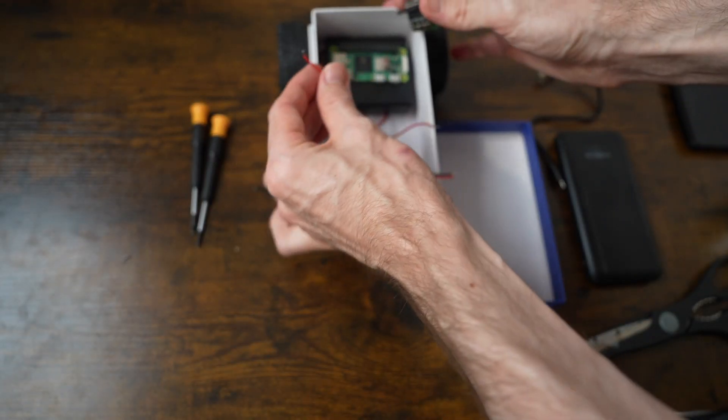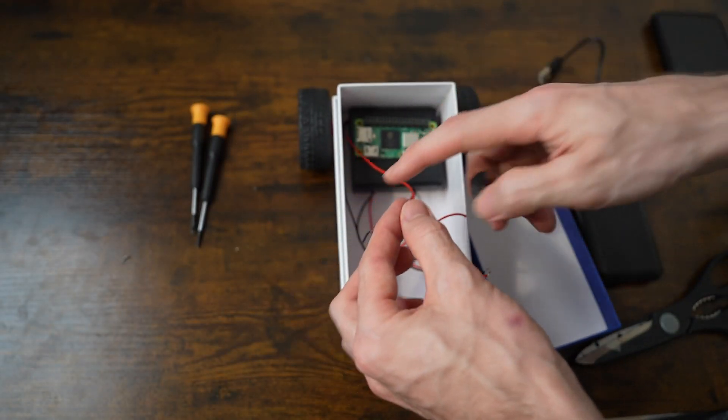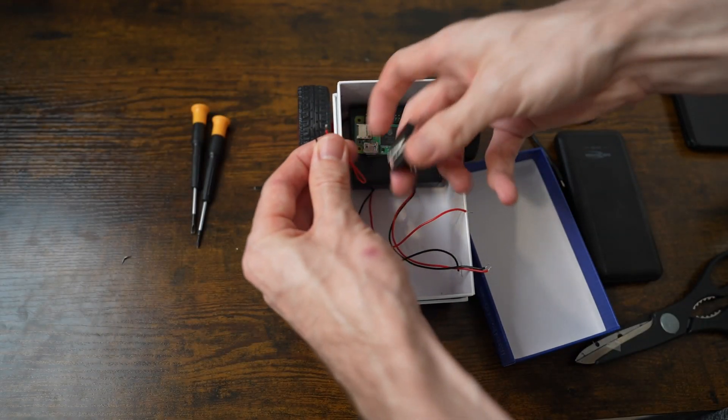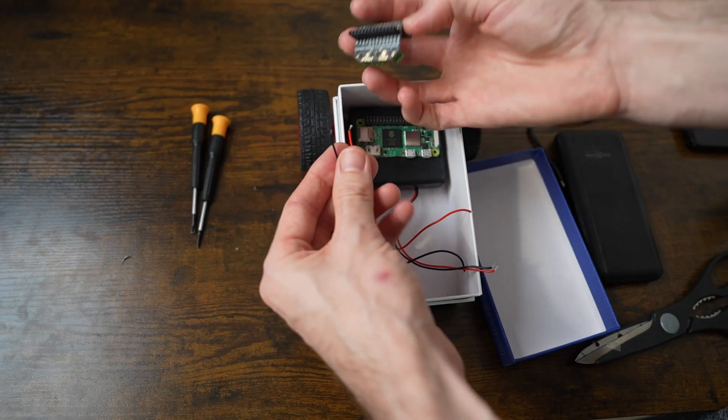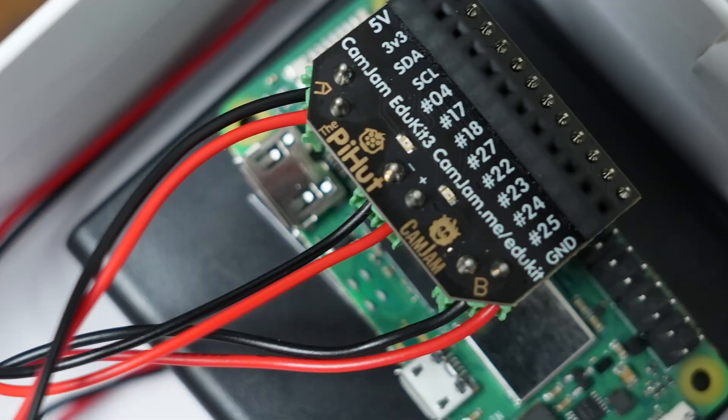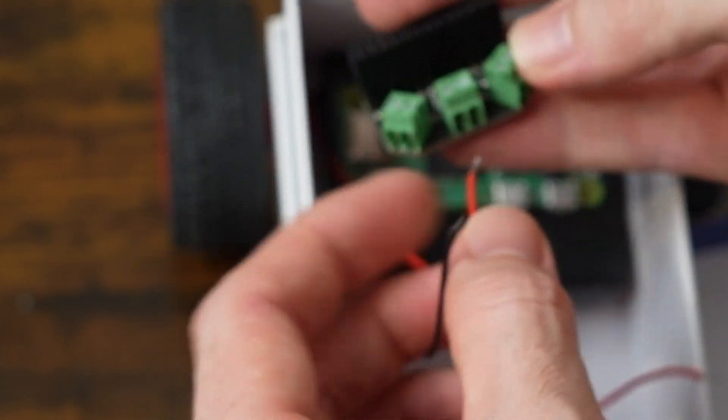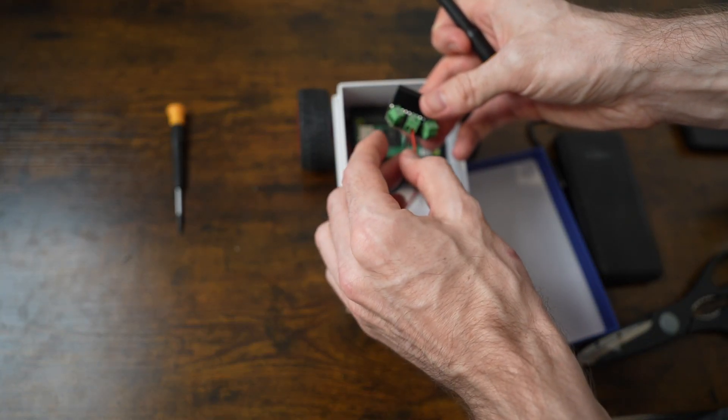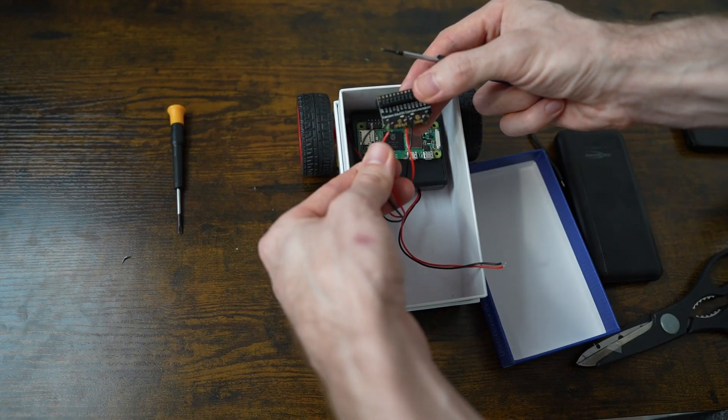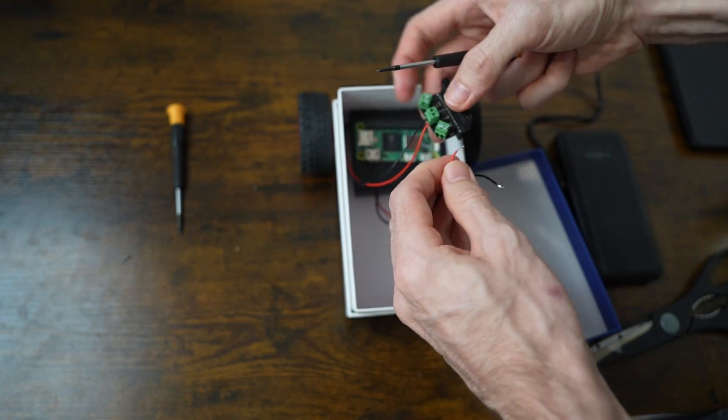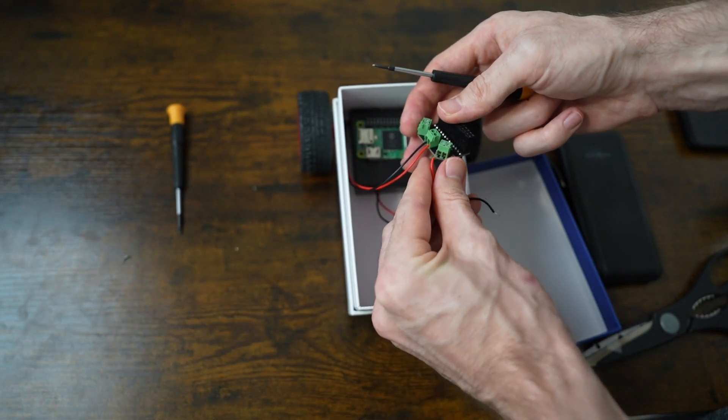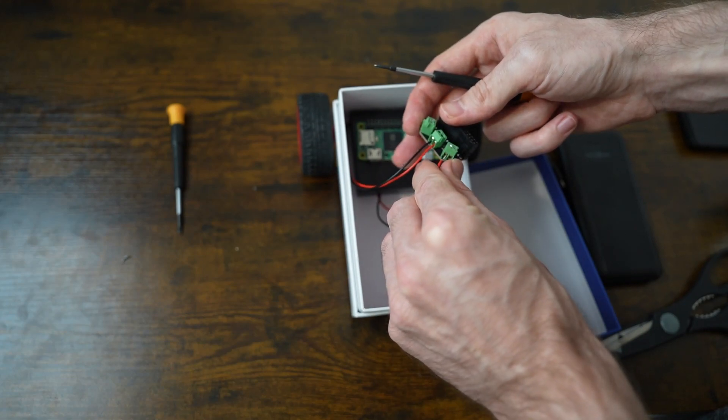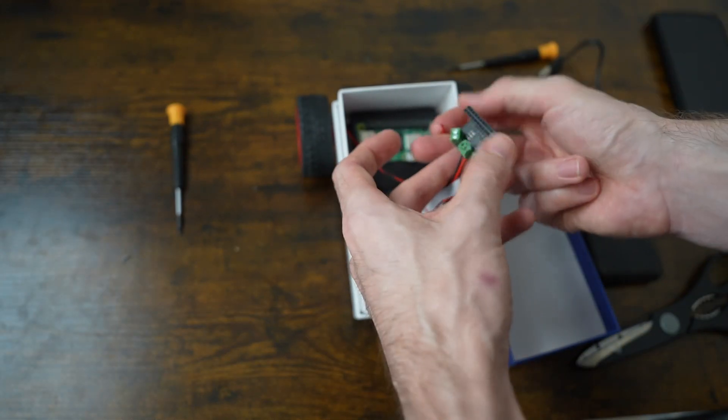The next step is to wire the motors and batteries in. Take the wires from the battery box and line them up with the center screw terminal on the controller board. Red wire to the plus sign and black to the minus. Then use a screwdriver to secure the wires in place. Do the same with the motor wires. Which side the red and black wires go doesn't matter.